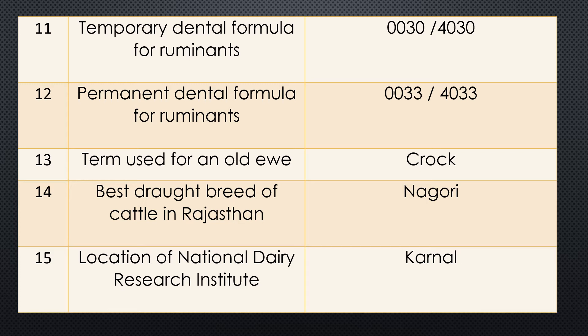Question fourteen: Best draft breed of cattle in Rajasthan. Answer is Nagori.